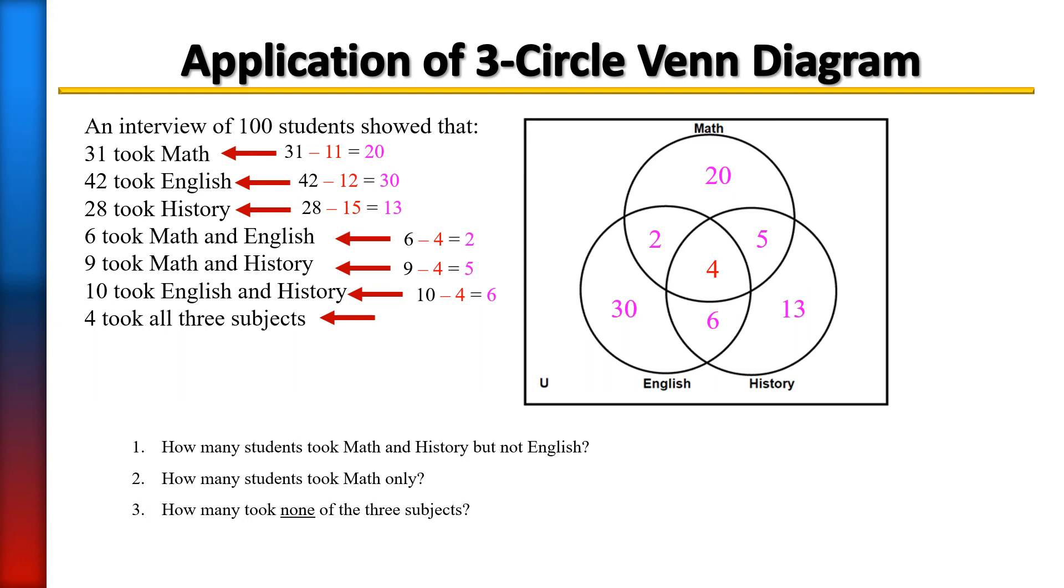We got our Venn diagram mostly done. We have everything in the circles, but that doesn't account for everyone because there were 100 students. So let's see if this amounts to 100. If you were to count all of this, it does not count up to 100. It actually counts up to 80. So that would be the other people that are outside who didn't take any, the remainder of that.